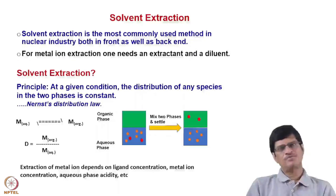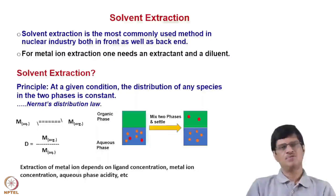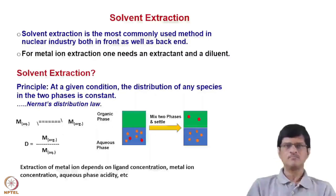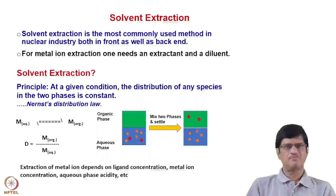The metal ion in the aqueous phase remains in a variety of species including the free metal ion and complex metal ions with the medium of the aqueous phase — for example, in nitric acid medium you have the nitrate complexes of the metal ion. The organic phase contains the extractable complex species. The extraction of the metal ion depends on the ligand concentration, metal ion concentration, aqueous phase acidity, and diluent composition.